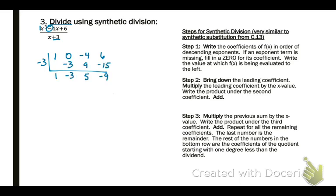Bring down the first number, multiply diagonally, and add vertically. Then place in your variable, starting with one degree lower, and write your last term as a remainder over the divisor. You can also rewrite that as x squared minus three x plus five, r, or remainder, negative nine.